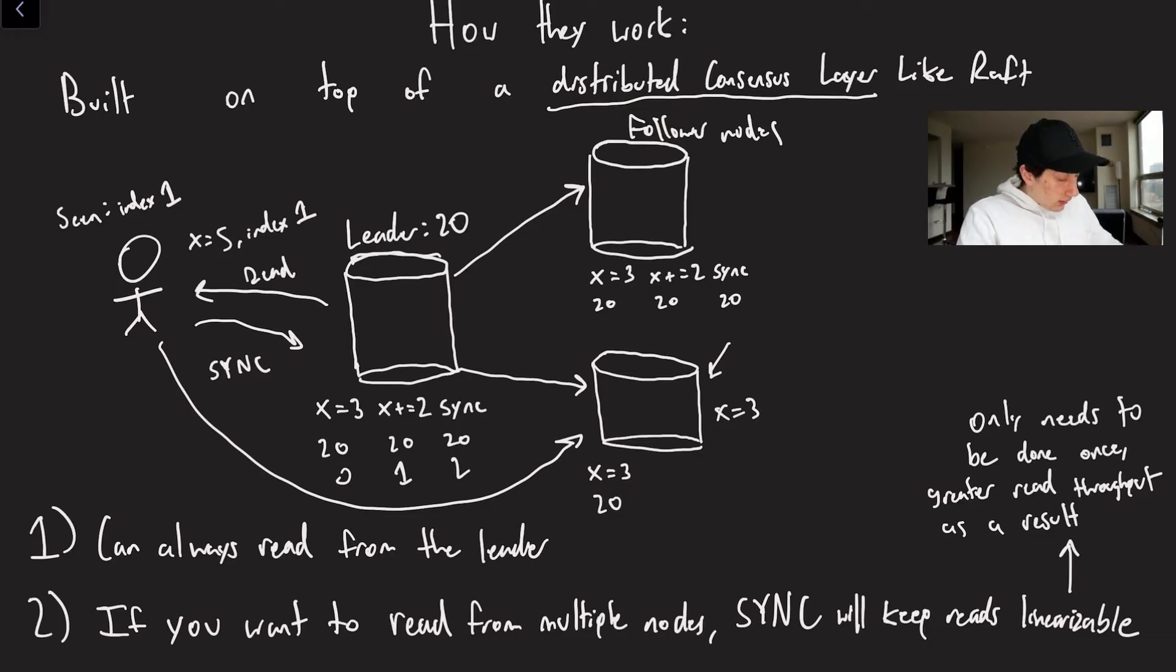So what can we do to avoid this situation? Well, we've got two easy options. One, we can always just read from the leader. That's a super easy option. However, it comes at the price of if we're always reading from the leader, that means that all writes and all reads are going through the leader. And that is going to be slow.